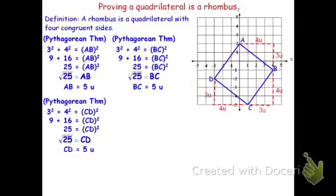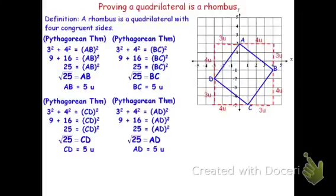And then lastly, for that last segment DA, its rise is 4, its run is 3. So, those are the legs of the right triangle, which means 4 squared plus 3 squared is again equal to AD squared by Pythagorean Theorem. And again, it'll work out to be 5 units.